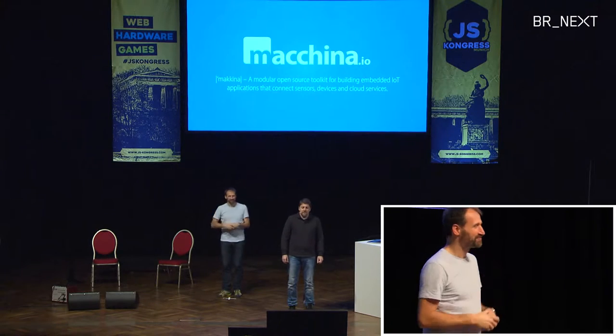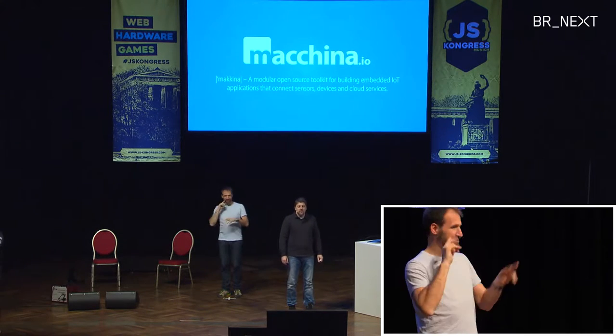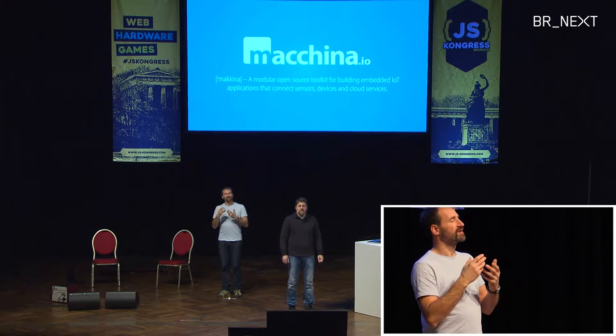As you can see on this picture, I look quite a bit younger than I look now. The picture obviously was taken before I started working with the Google V8 engine — no, just kidding, V8 is great. So what I'm going to talk about is my latest open source project called Machina.IO. It's a modular open source toolkit for building embedded IoT applications that connect sensors, devices, and cloud services, targeted at devices like Raspberry Pi or BeagleBone, but also professional industrial variants.